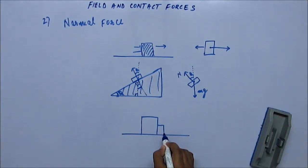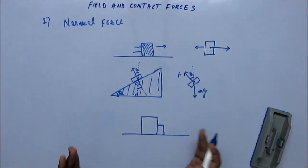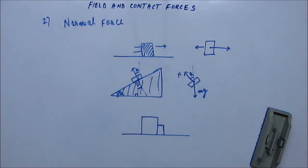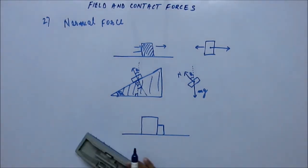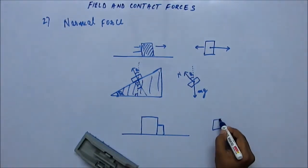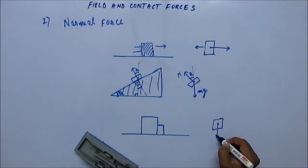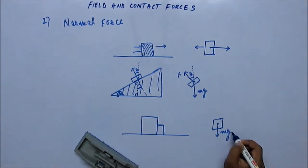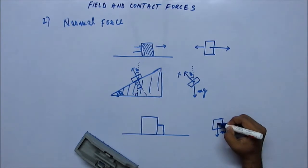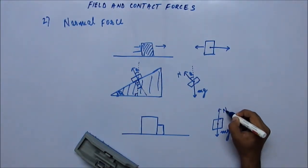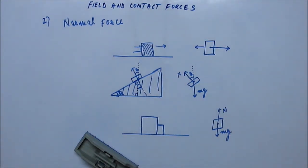Now let's consider another condition. Suppose there are two blocks kept side by side, you press them together and then release. Let's talk about the forces acting on the smaller block. One force is always mg, pulling it downward. It is not moving downward, so there is some normal reaction from the surface upward, equal in magnitude to mg. It is also not moving in the horizontal direction.